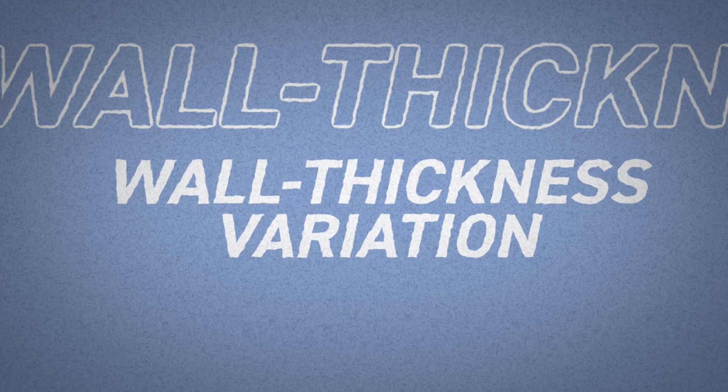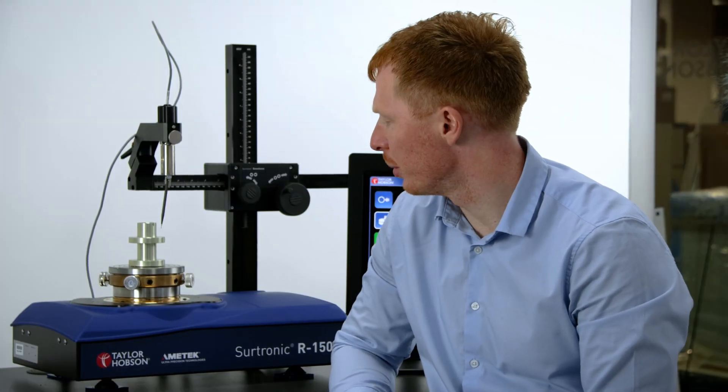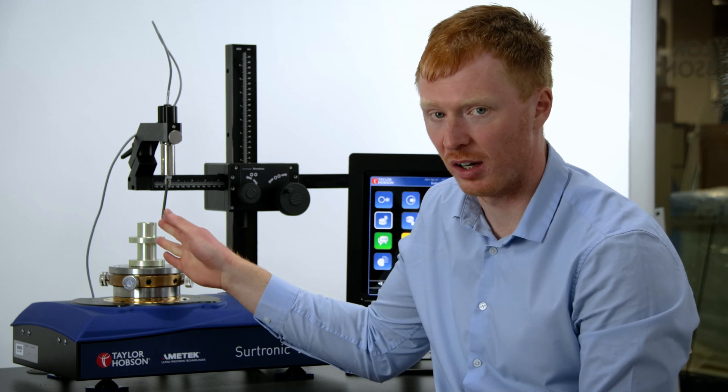The next measurement we're going to take a look at is wall thickness variation. The great feature is that we can measure over center, which means there's no need to orientate the gauge between measurements. This is really important for production environments where we want fast measurements.